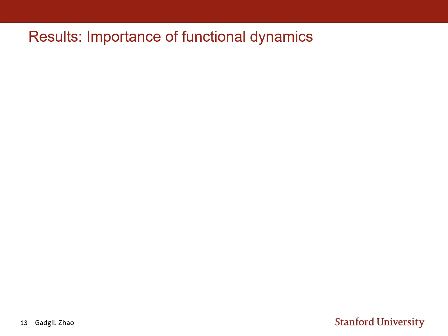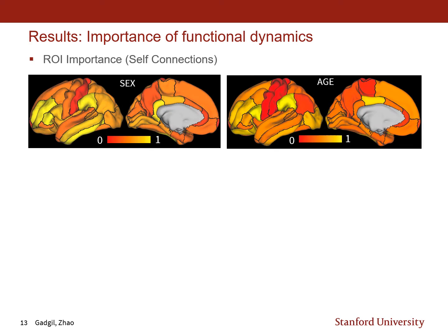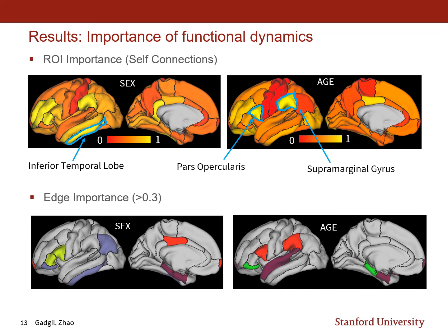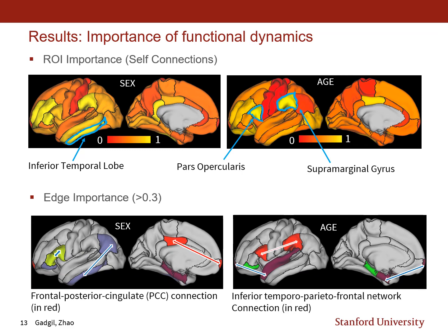Looking at the results from the edge importance matrix for the NCANDA dataset: for ROI importance, the most important region for sex prediction was the inferior temporal lobe, while for age the most important regions were the pars opercularis and supramarginal gyrus. For edge importance, functional connections between ROIs with importance higher than 0.3 are highlighted. For sex prediction, the most important edge was the frontal-posterior cingulate (PCC) connection. For age, it was the inferior temporal parieto-frontal network connection. This brain mapping was done by co-author Shin-Yu Zhao.